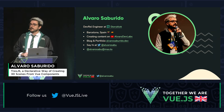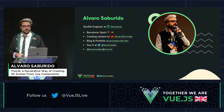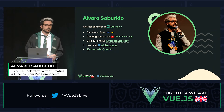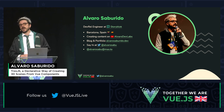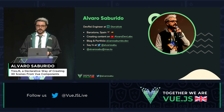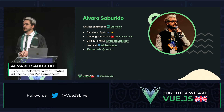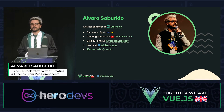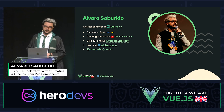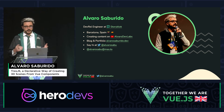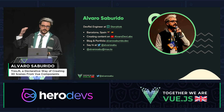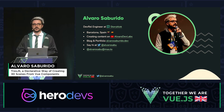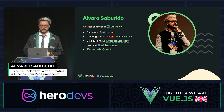With that, I present myself. My name is Alvaro Saburido. I'm a DevRel engineer at StoryBlock. I'm from Barcelona, Spain, but originally from Venezuela. I create a lot of content at Alvaro Dev Labs. Some links if you want to follow — say hi, always welcome.